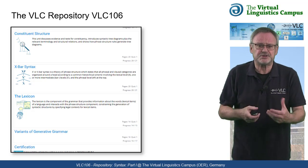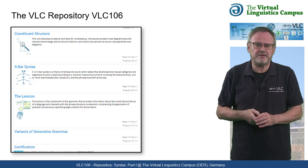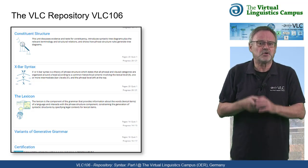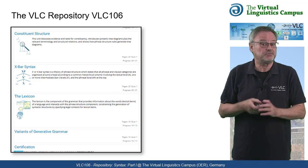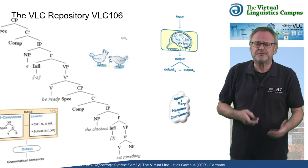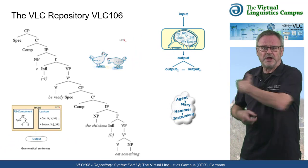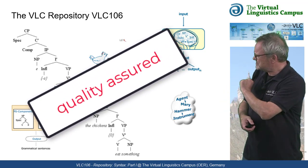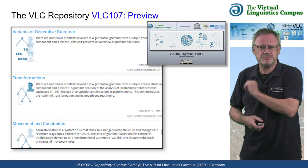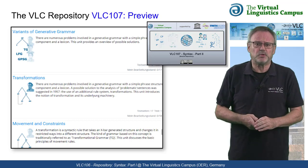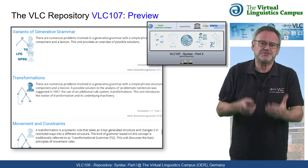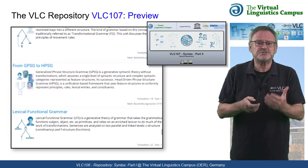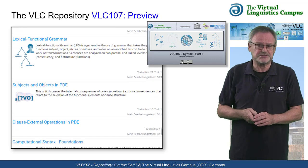An overview of the lexicon as the second big component of any modern grammar and a discussion of the most well-known variants of generative grammar concludes this introductory repository. The list of units is updated and quality assured on a regular basis. By the way, in our second syntax repository VLC 107, which builds upon 106, the specific components and mechanisms of different generative grammars as well as the principles of computational syntax will be discussed in detail.